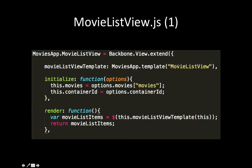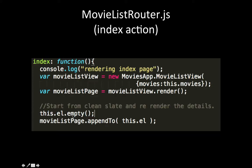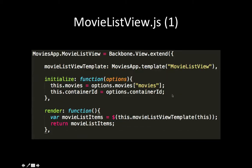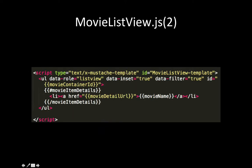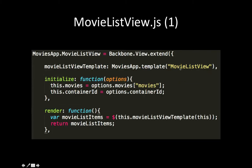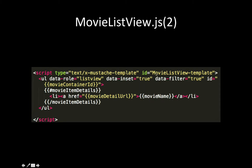The router's main role is to talk to the view, get the HTML, start from a clean slate, and put the HTML. The view's main role is to look at the template, populate it with the data, and render it. Here in the router we call view.render — in this case it's the movie list view. The render method takes in the template 'movie list view template', gives it all the data, and generates the HTML. We specify the template name 'movie list view' by its id 'movie-list-view-template' — this is a Mustache template.